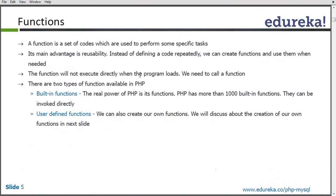Once you have written a function, you can call it multiple times wherever you want, depending upon the scope of the function — whether it is in private scope, public scope, or another kind of scope. A function will not execute directly when the program loads. We have to invoke the function in order to execute its statements.